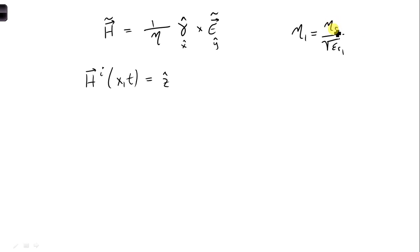So eta nought is just the characteristic impedance for free space, and if we just adjust it by the relative permittivity of the material that we have, we can plug in our numbers and get 251.33 ohms.